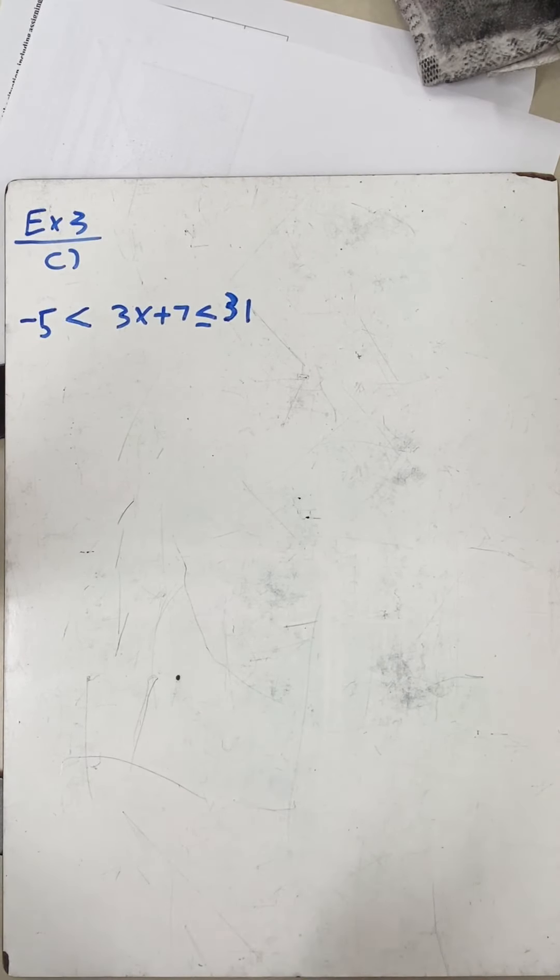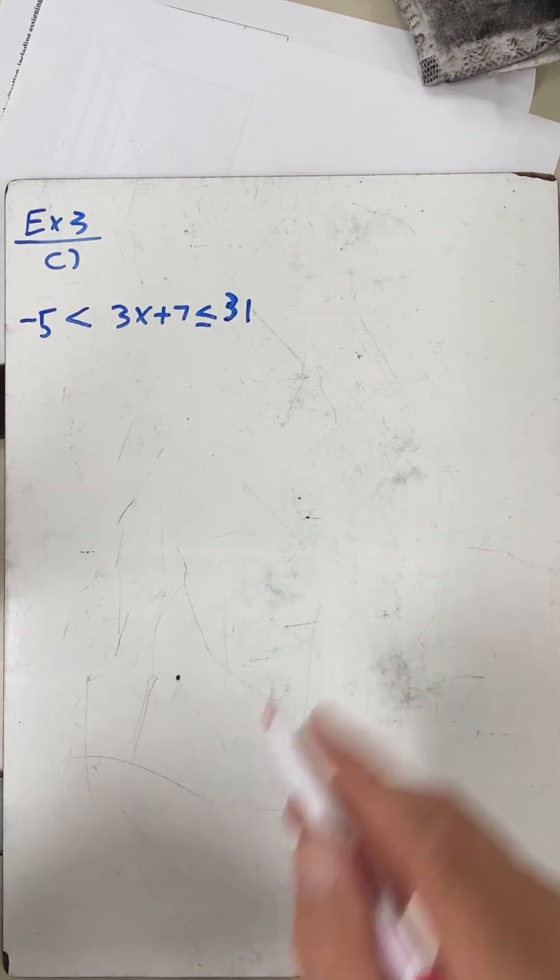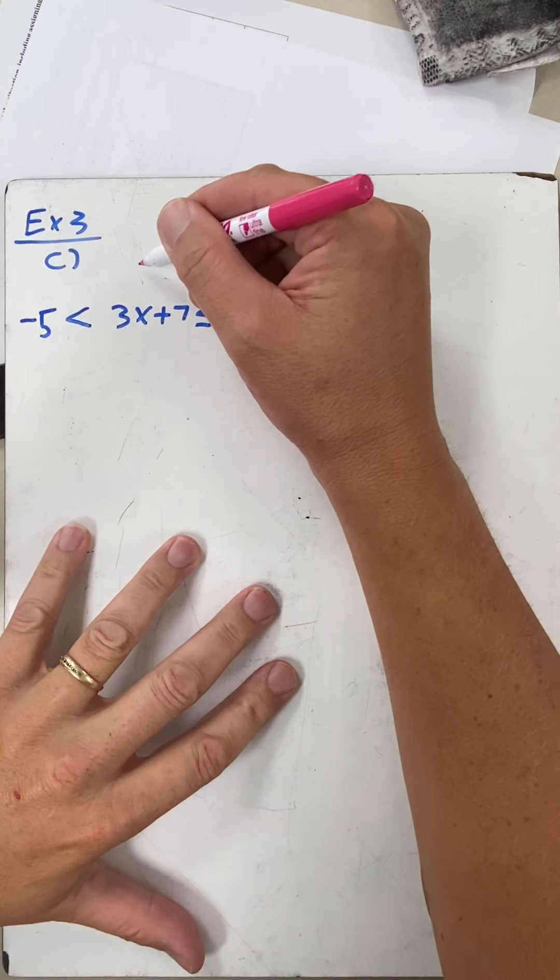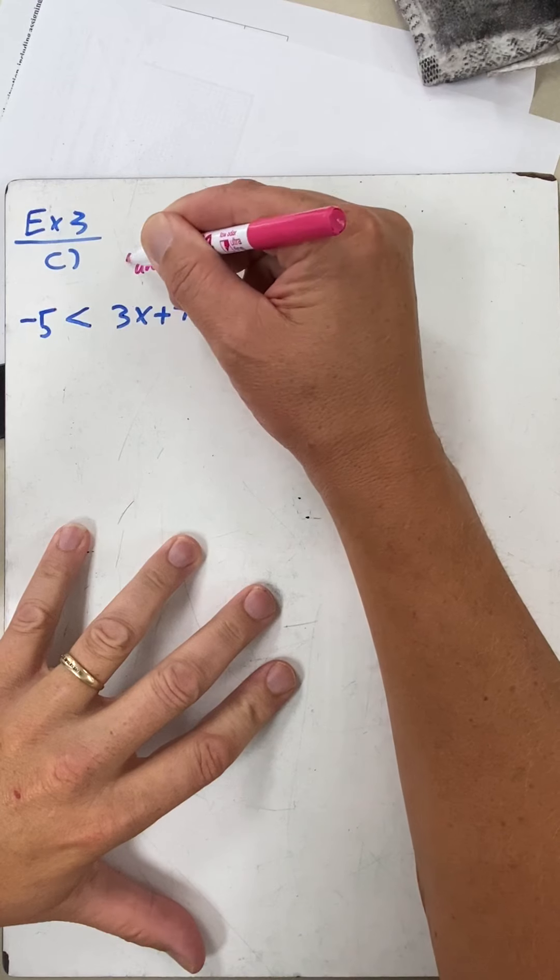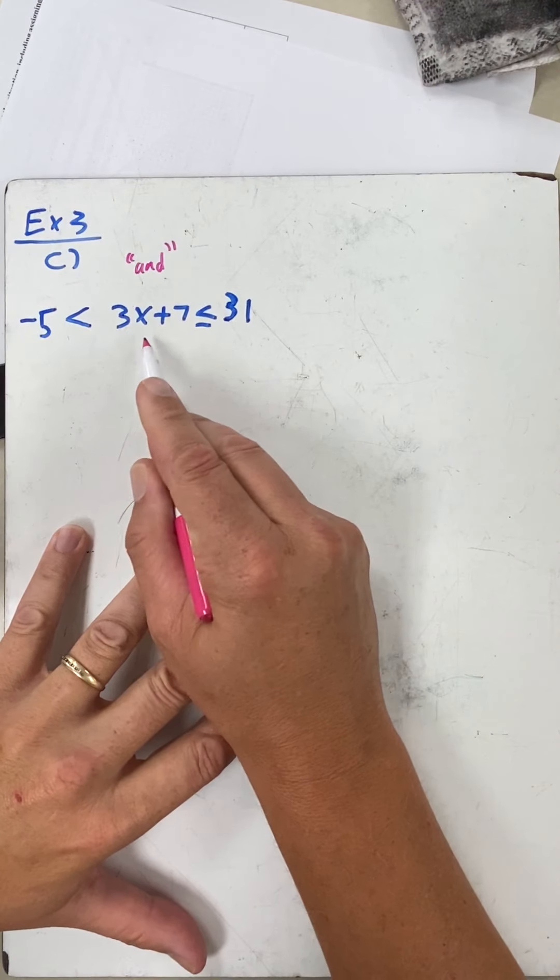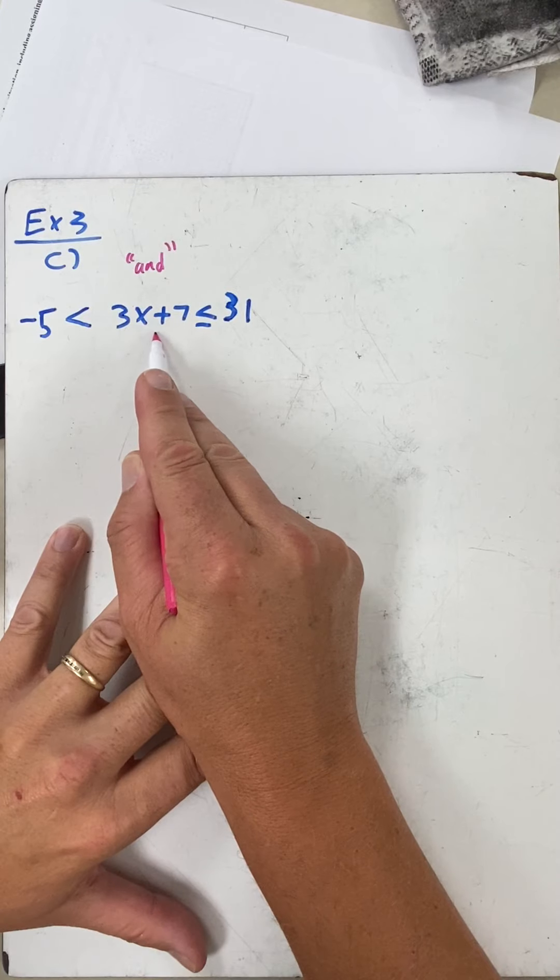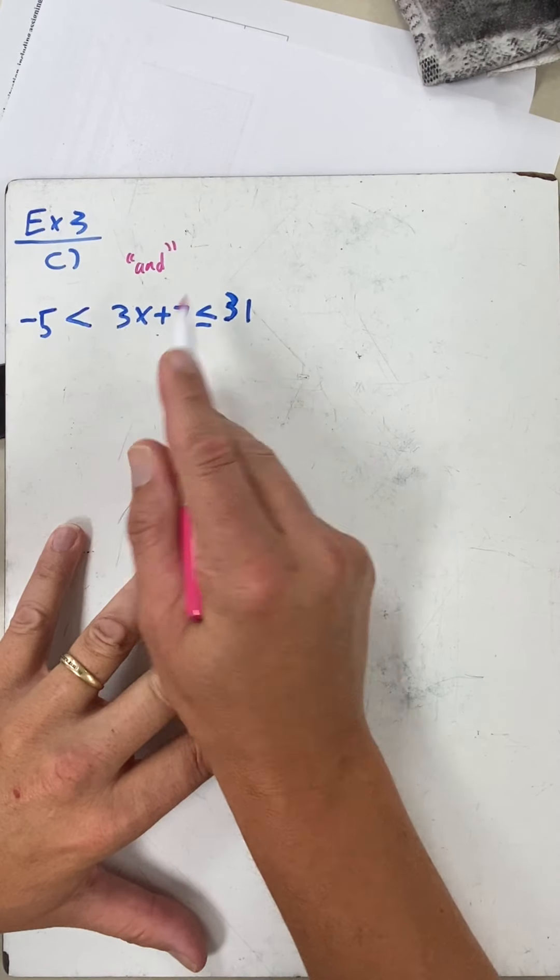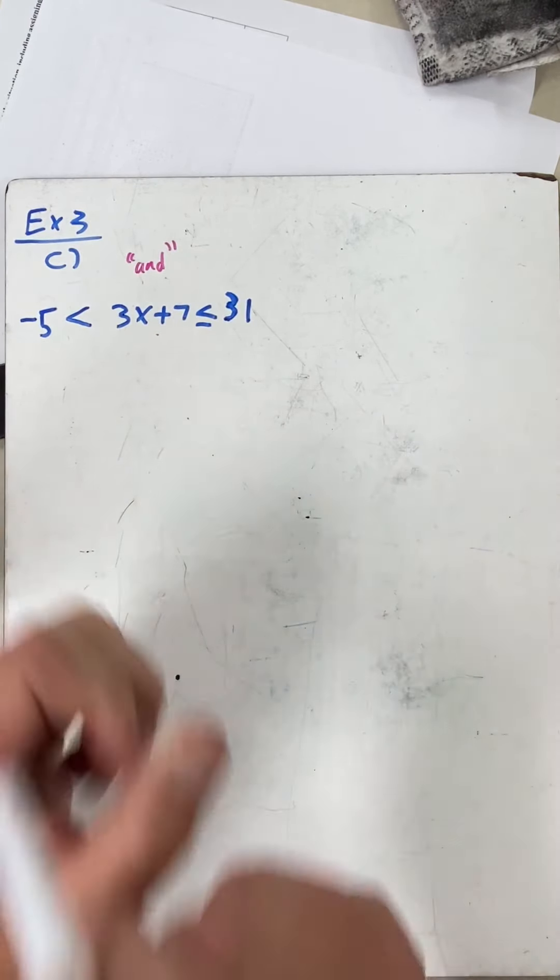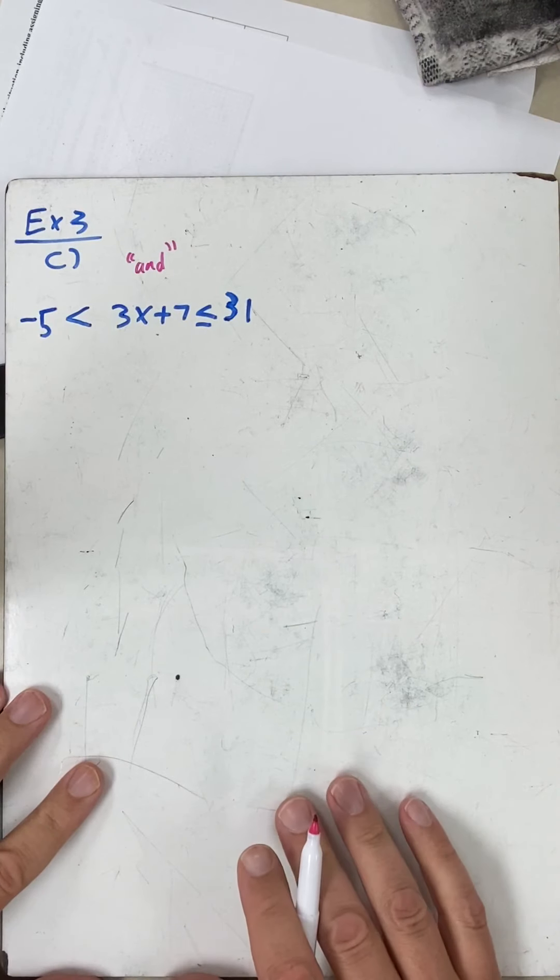Okay, this is our last example. Kind of a long group of videos, but just a lot to cover, though they're not super hard. The way this is written, this is also an 'and' problem. It doesn't have a word, but the x is stuck between two inequalities, which is kind of what those 'and' pictures did. So we're going to have two circles and a line connecting, just like we did in the last one.